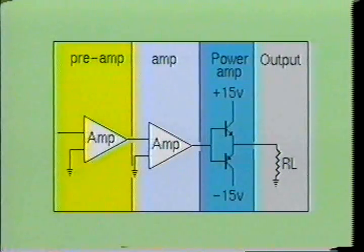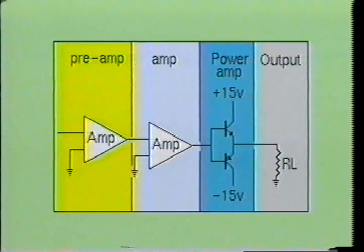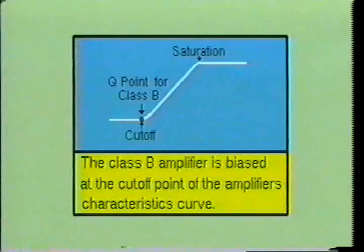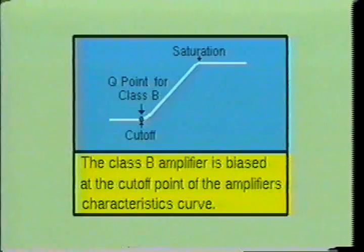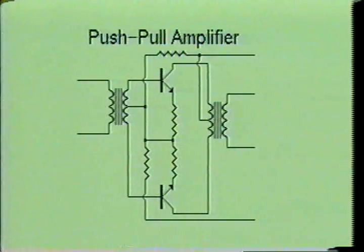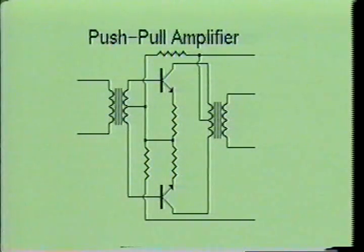After the weak signal has been amplified sufficiently, it is fed into a power amplifier to develop the power necessary to drive the output load. Audio power amplifiers are biased class B. The class B amplifier is biased at the cutoff point, so current will only flow through the class B amplifier when driven into conduction by the incoming signal. Since current only flows in the class B amplifier for half of every cycle, it generally requires the use of two transistors to amplify the incoming signal, with each transistor amplifying half of every cycle. We call this arrangement a push-pull amplifier.